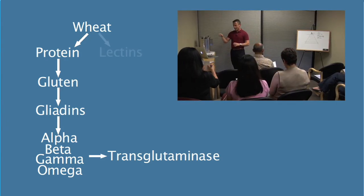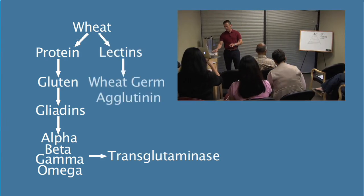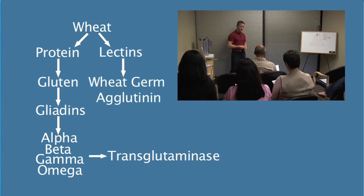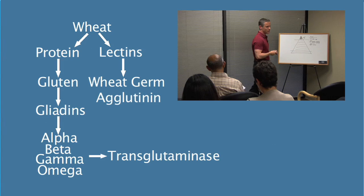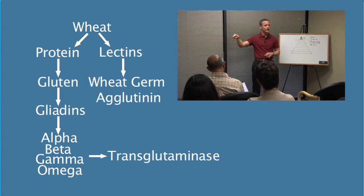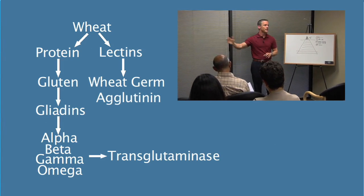If you go over to the part with lectins that breaks down into wheat germ agglutinin, that is one that is found more in sprouted grains. For people that have severe reactions to gluten, that is the most severe. Most of the time, they're actually reacting to that. But it's never tested.